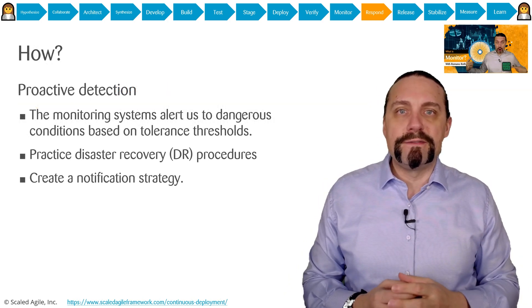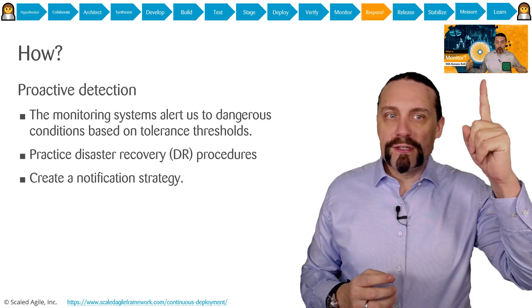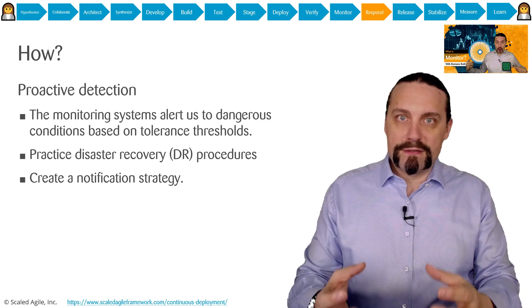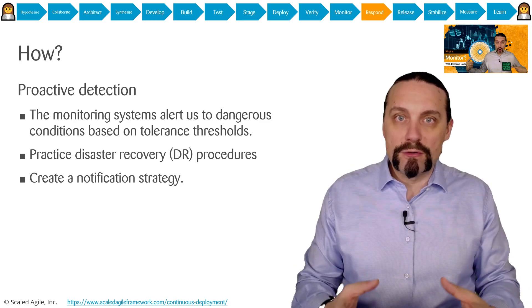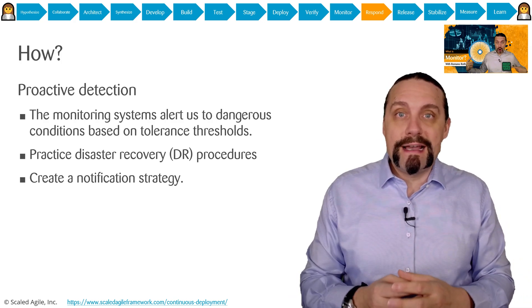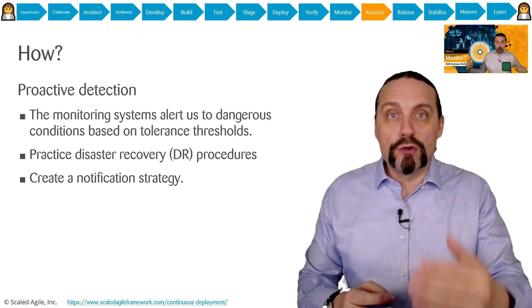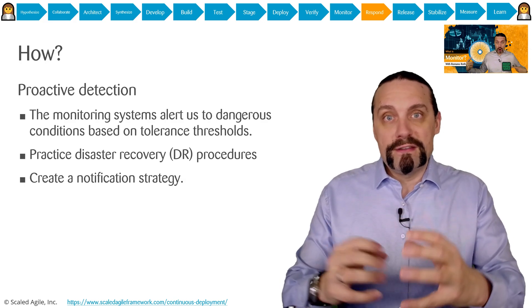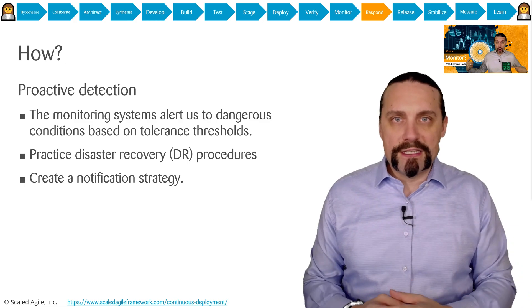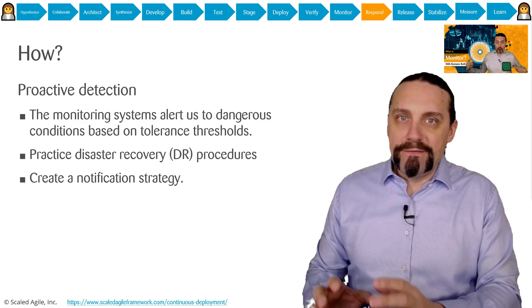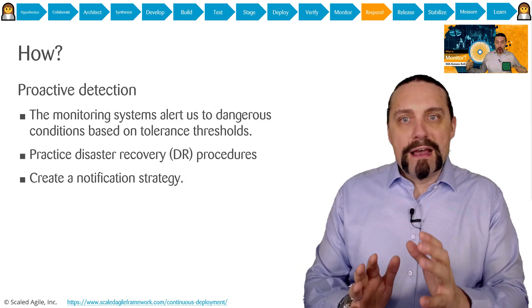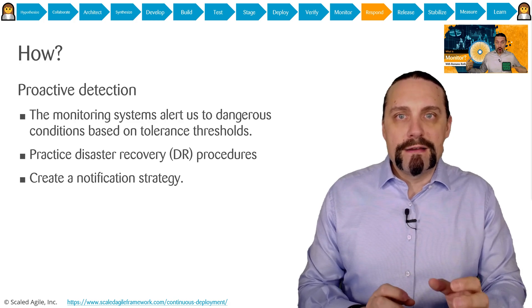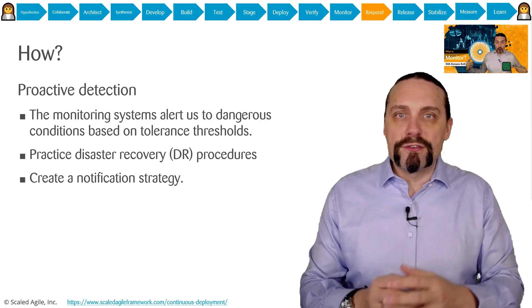We do this by proactive detection. Because we now have all of these log files and telemetry data in place, we can create tolerance thresholds for this telemetry data, which we can use to alert us of dangerous conditions. For that we need a notification strategy — we should not alert for everything, but have the right thresholds in place and create notifications for really dangerous conditions, so that we don't get into alert or notification fatigue.